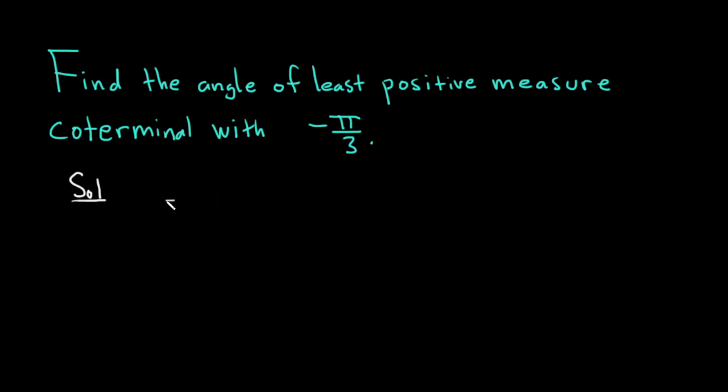So what we can do is simply add 2 pi to it and we'll get another angle that differs by 2 pi. So negative pi over 3 plus 2 pi.